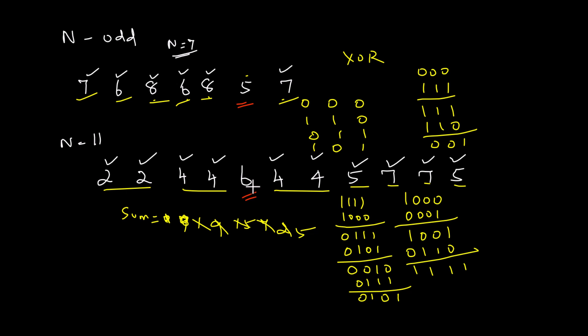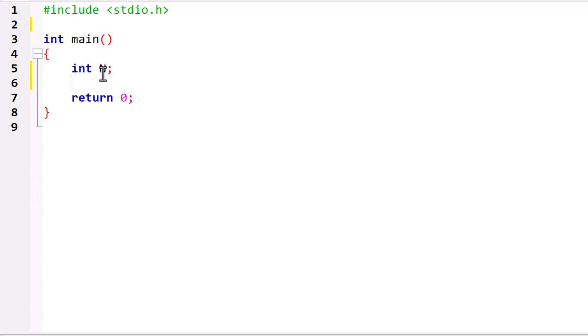Let us implement this in C program. Now we are going to accept N integers. First we will accept N. We will say result. That is the number which is repeated odd number of times is equal to 0.